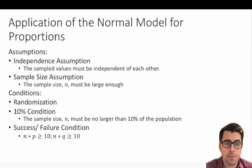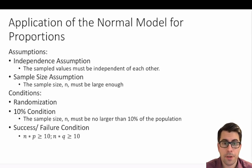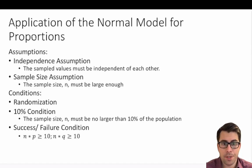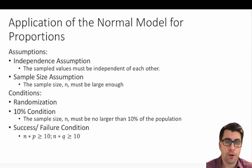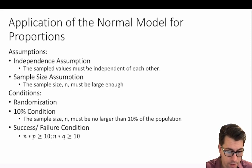The 10% condition requires that the sample size must be no larger than 10% of the population. Oftentimes we don't need to worry about that because quite frequently our sample will be nowhere close to 10% of the population. But if we're dealing with a very small population, we need to be cognizant of that 10% rule. When we exceed the 10% rule, we apply the finite population correction factor to our standard deviation. Finally, we have our success-failure condition.